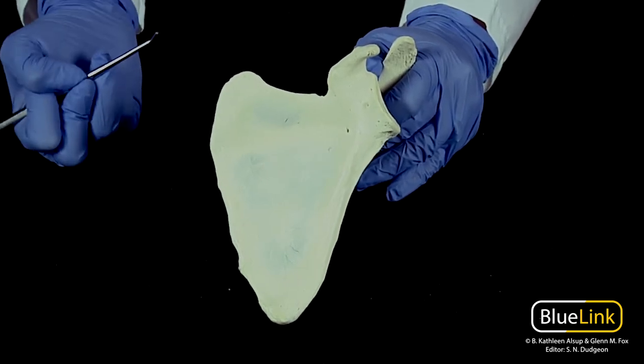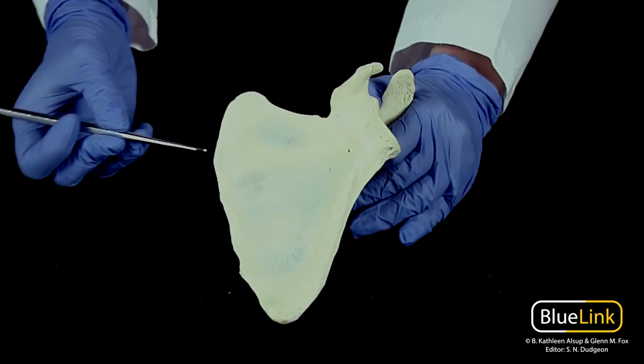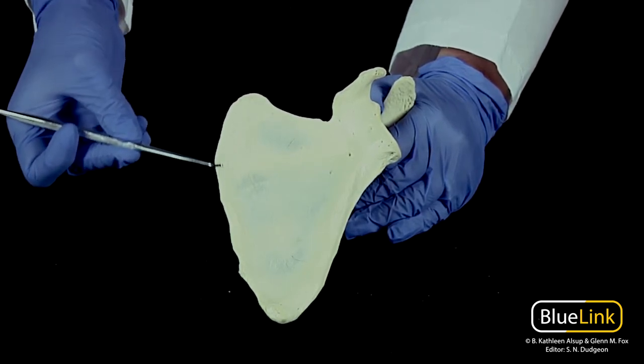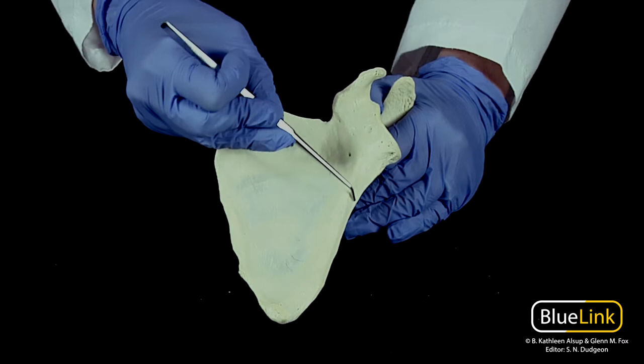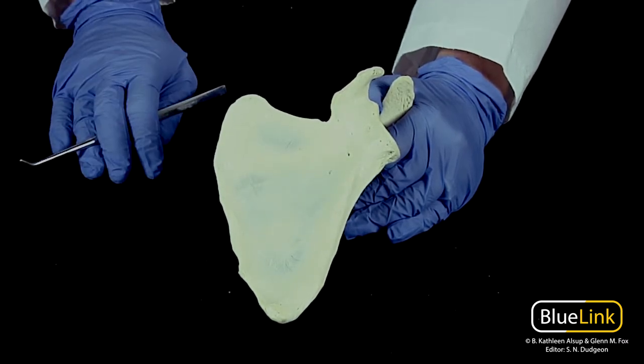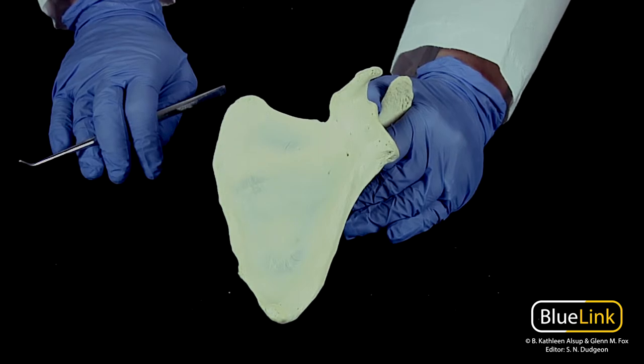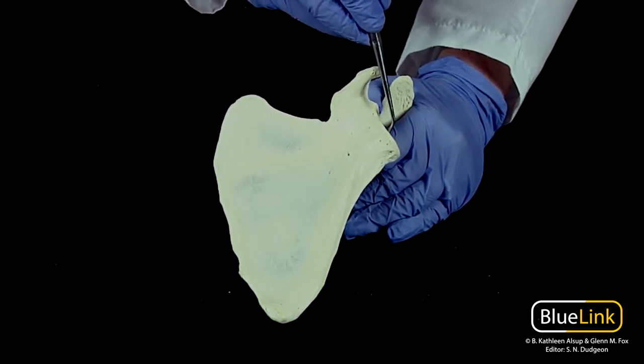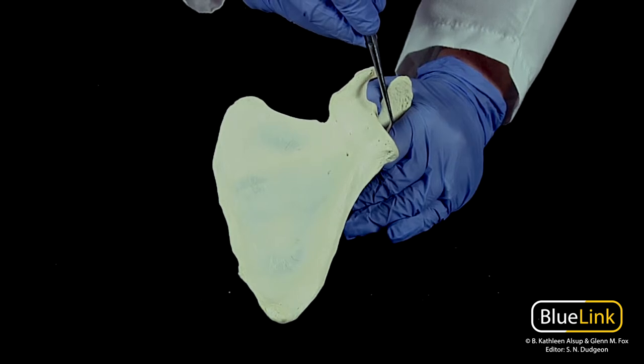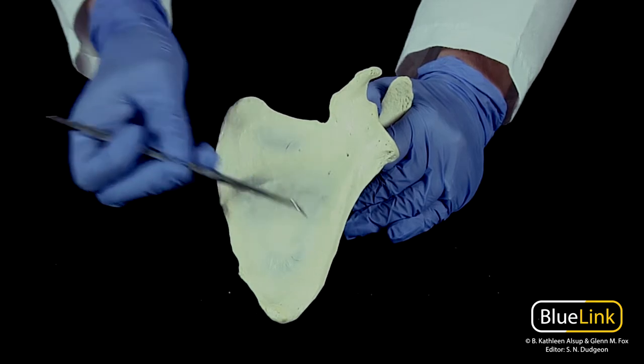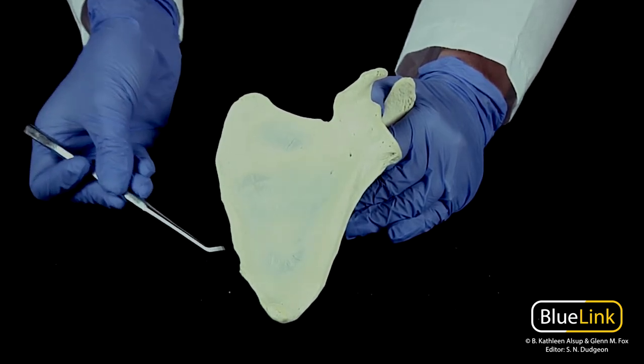There are two main borders associated with the scapula. You're going to have the medial border and the lateral border. And sometimes when I'm getting confused as to which one's medial or lateral, I think about where the glenoid cavity is. You know the glenoid cavity has to be lateral because it's articulating with the humerus, so this has to be the lateral border, whereas this is the medial.